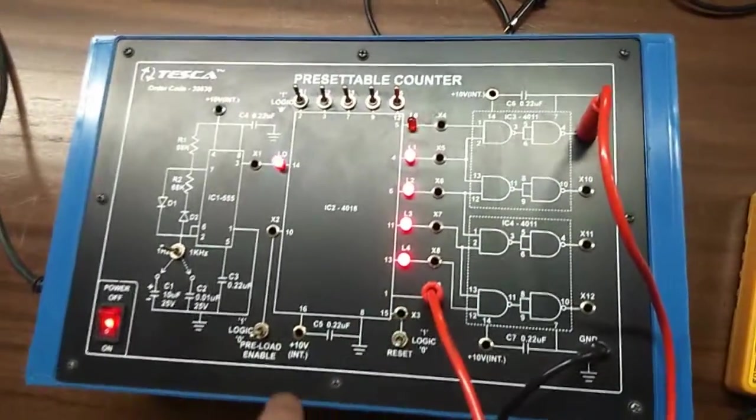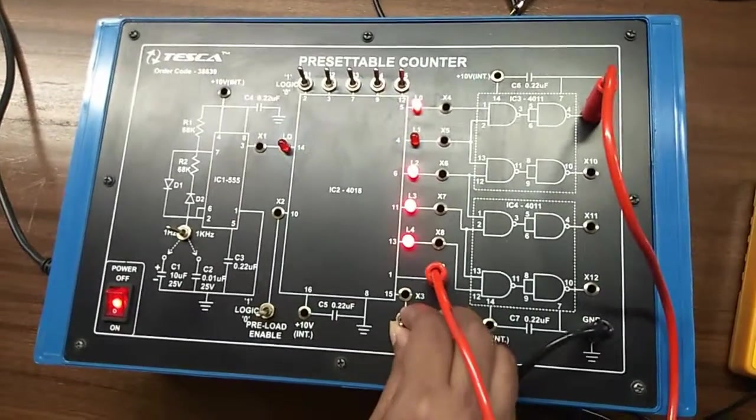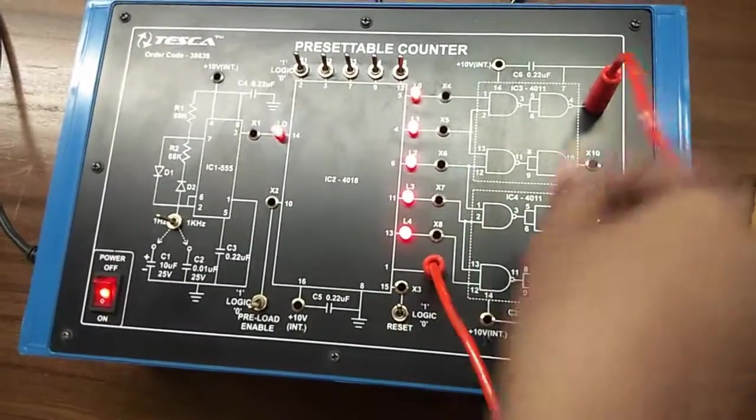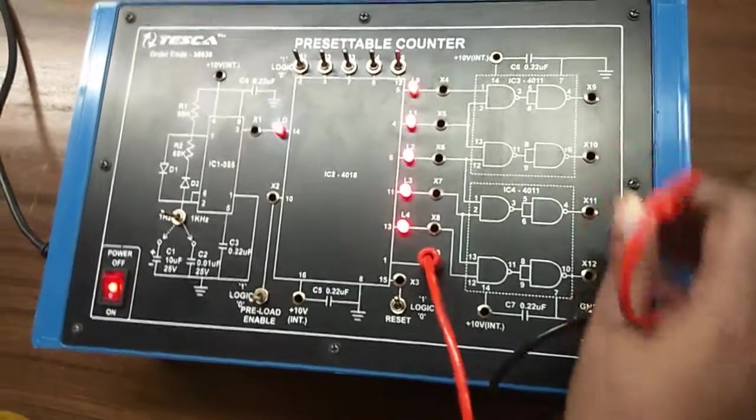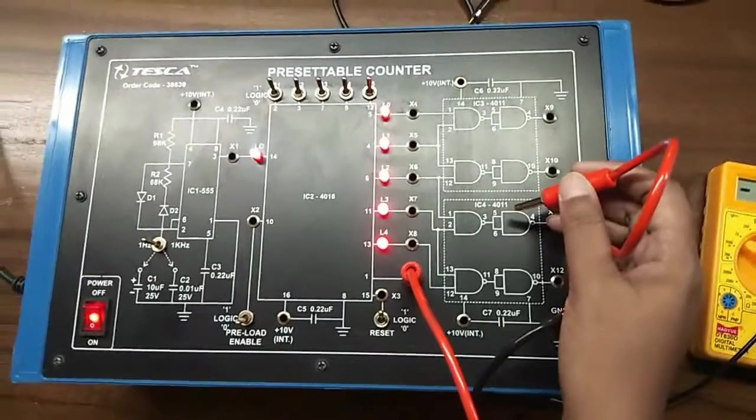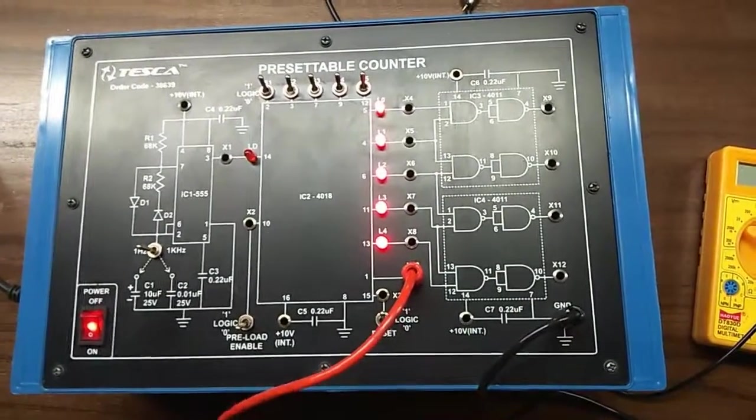Now start the counting. Similarly, short X10, X11, and X12 one by one to observe divide by 3, divide by 5, divide by 7, and divide by 9 mode.